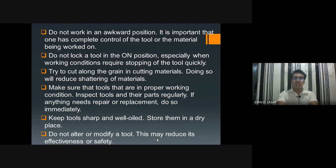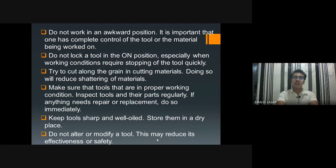Try to cut along the grain when cutting materials. Doing so will reduce scattering of materials. When cutting, try to cut along the grain — so it is not against the grain of the wood being cut — to reduce the material from splintering or scattering. The cut should be smooth and continuous. Always try to cut along the grain.